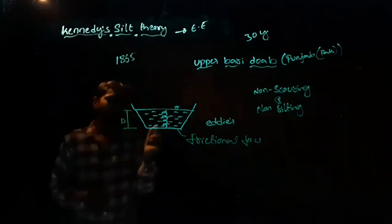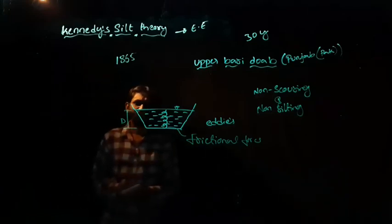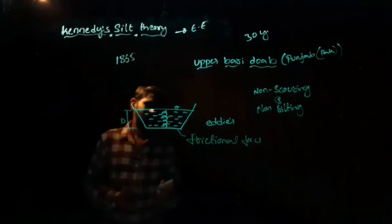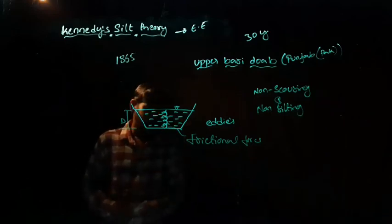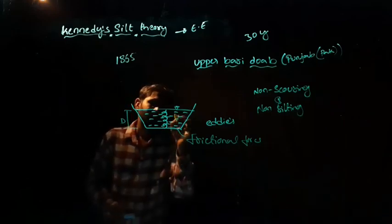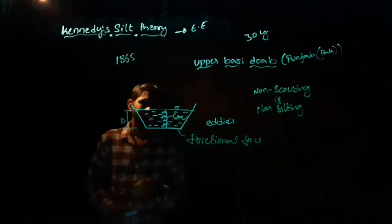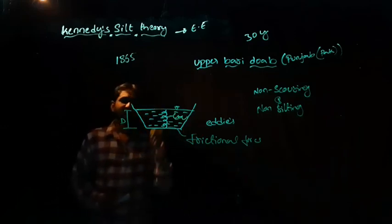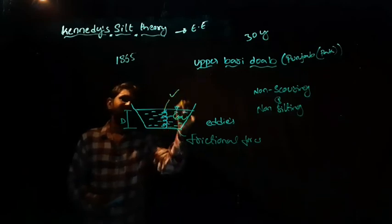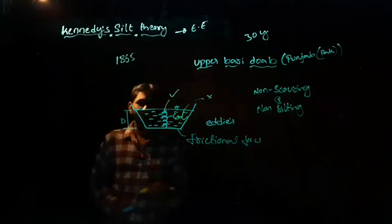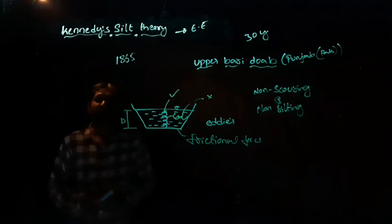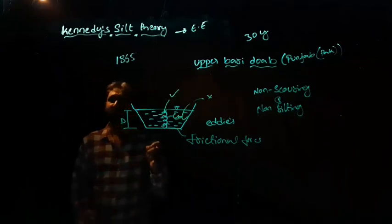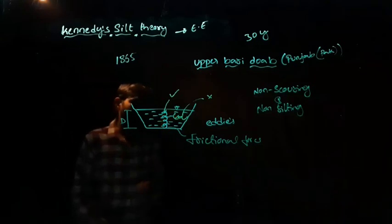And here, you may get a doubt. Why only the vertical one? The slope also, the eddies will also get from the side slopes also. Of course, from the sides also the eddies are going to be formed. But here, the silt carrying power is more in vertical ones rather than the horizontal ones. Eddies are going to be formed from the horizontal, but there is no case of power to carry the silt for these horizontal ones.